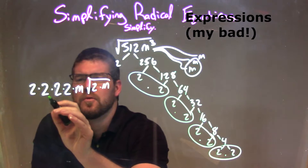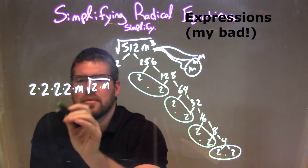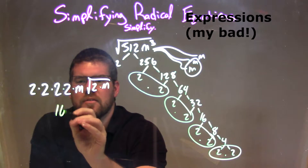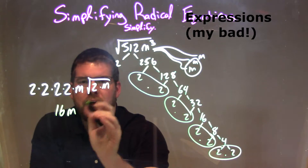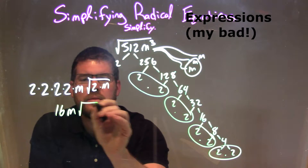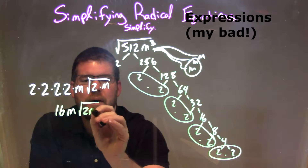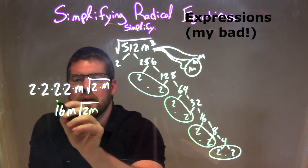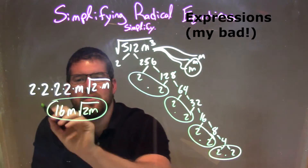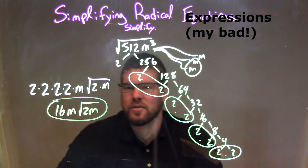So 2 times 2 is 4, times 2 is 8, times 2 is 16. So it's 16m on the outside, times the square root of 2m on the inside. And that is our final answer, simplified.